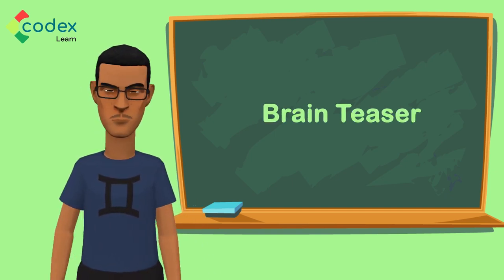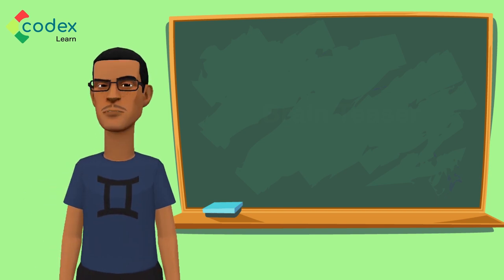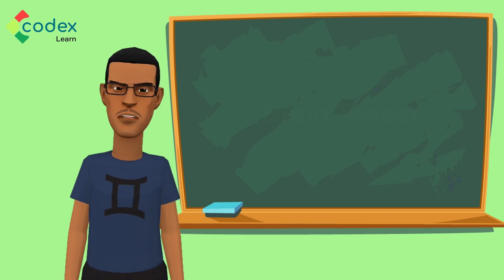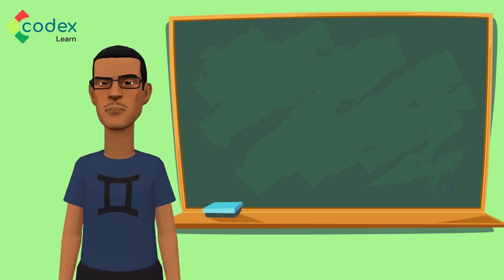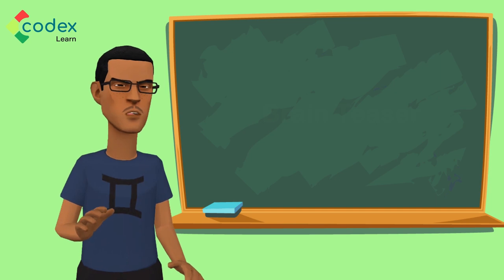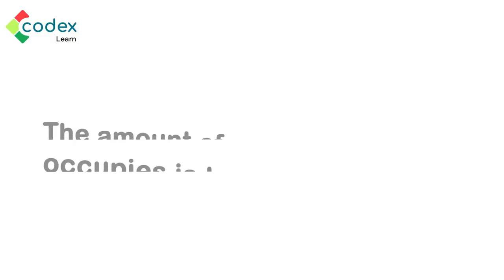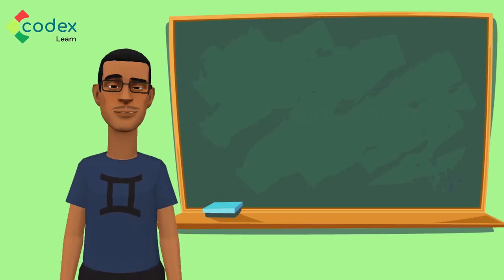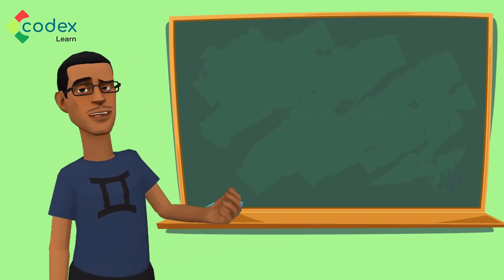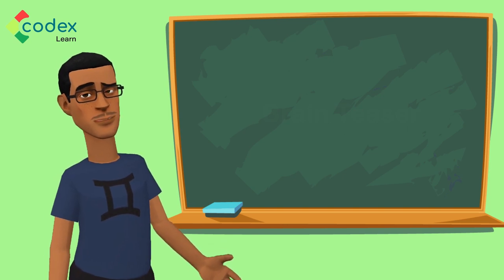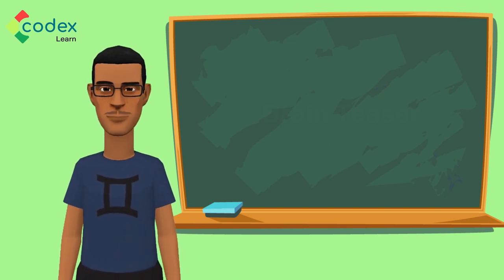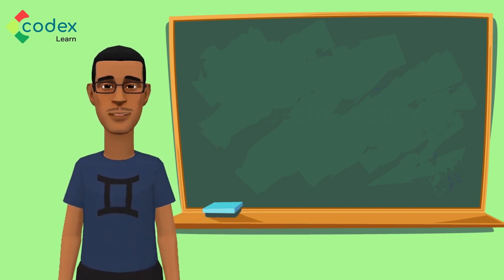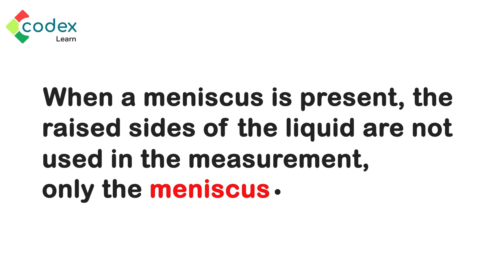How well can you remember all that we've learned? Well, let's test this, shall we? One: If I pour water from my cup to a bowl, the water is no longer cylindrical but fills up a circular space. The amount of space that the water takes up is the same but in different shapes. What is this called? Great work! The amount of space that a liquid occupies is known as volume. Two: A meniscus forms sometimes when measuring cylinders are used to measure liquids. Even though the sides of the liquid are higher, when this happens, which measurement is used? Excellent! When a meniscus is present, the raised sides of the liquid are not used in the measurements, only the meniscus.